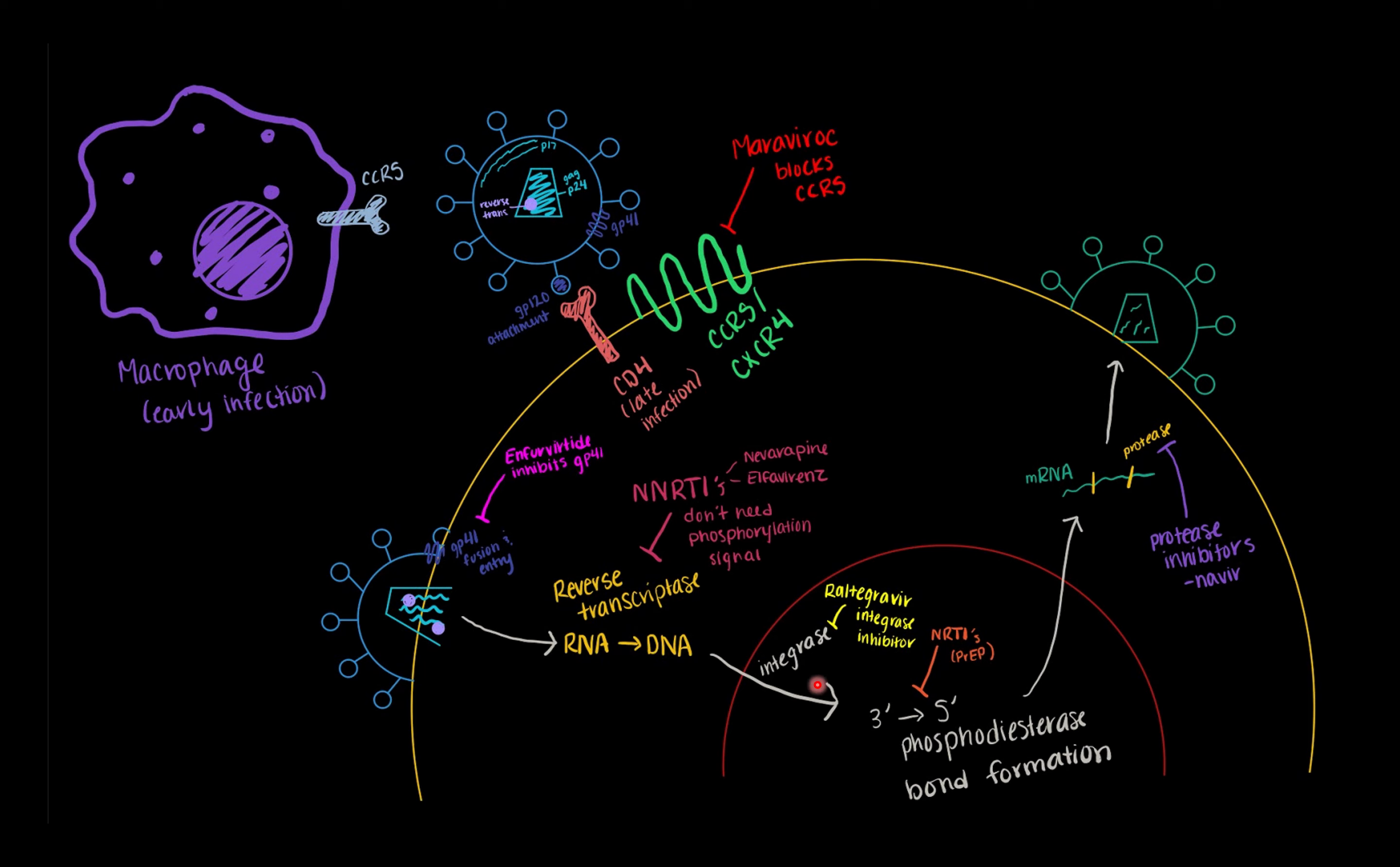Okay so we did the reverse transcriptase and we integrate into the nucleus. Integrase is inhibited by Raltegravir, it's an integrase inhibitor. And then I have the NRTIs right here because we think of them as reverse transcriptase inhibitors but if you watch the sketchy it goes about talking through that they inhibit the 3' to 5' prime phosphodiesterase bonds within the nucleus and this is actually how PrEP works. PrEP is the drug that you take if you are wanting to have sex with somebody who is HIV positive and so if you take PrEP it's actually an NRTI.